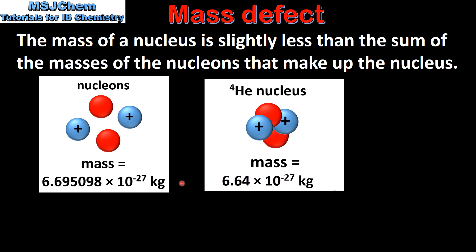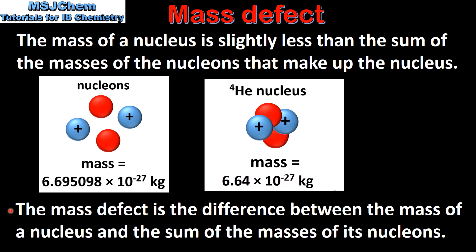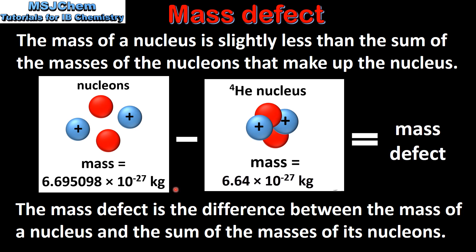This difference in mass is known as the mass defect. The mass defect is the difference between the mass of a nucleus and the sum of the masses of its nucleons. To calculate the mass defect we subtract the mass of the nucleus from the total mass of the nucleons that make up the nucleus.